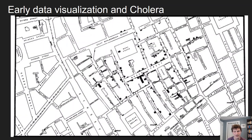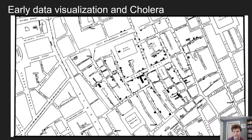We're going to work on this in the assignment — we're actually going to download and work directly with this data. Jon Snow was essentially trying to visualize the data of where people were dying, and once he saw this map, he was able to find a pump that had been infected with cholera and was getting all these folks sick. This is a really famous story about the beginnings of epidemiology — finding out where a disease is starting from and how it's spreading in the community.